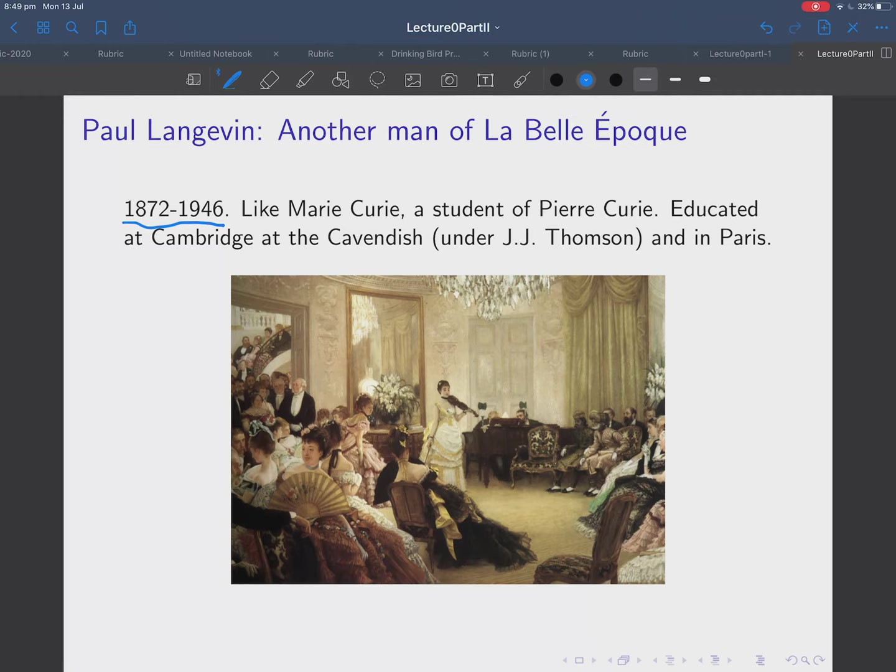Now, this might seem very alien to people who have been born, say, in the year 2000, because for the first 20 years of this century, it's been basically pessimism. Everyone's either a sexist or a racist or a homophobe or a transphobe, or if you're not any of those, you're responsible for massive climate change. But it is possible to live in a world where people are optimistic, and this is the world in which Paul Langevin found himself.